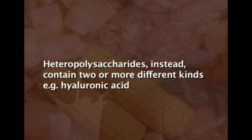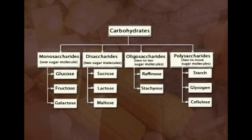Heteropolysaccharides contain two or more different types of monosaccharides — for example, hyaluronic acid. To summarize, carbohydrates include monosaccharides such as glucose, fructose, and galactose; disaccharides such as sucrose, lactose, and maltose; oligosaccharides such as raffinose and stachyose, which are abundantly present in peas and lentils. These cannot be digested and cause flatulence.